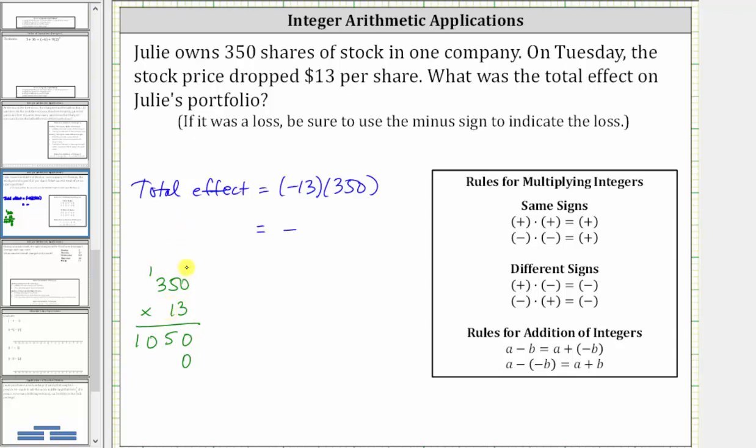And now we multiply by one. One times zero is zero. One times five is five. And one times three is three.